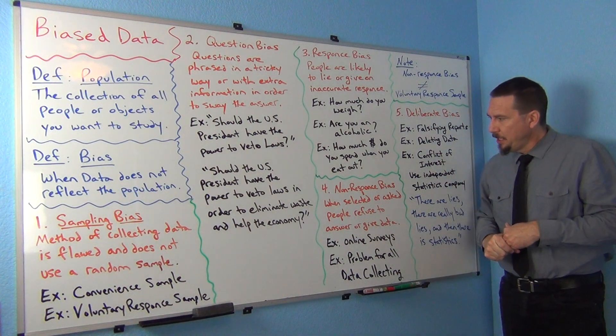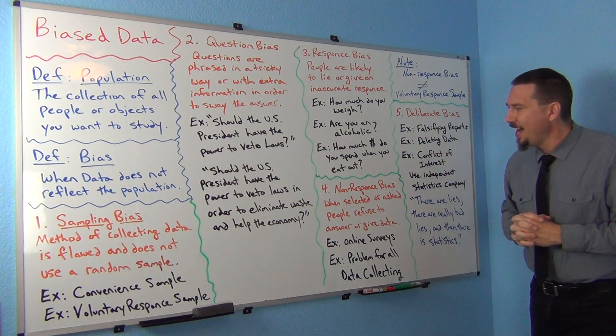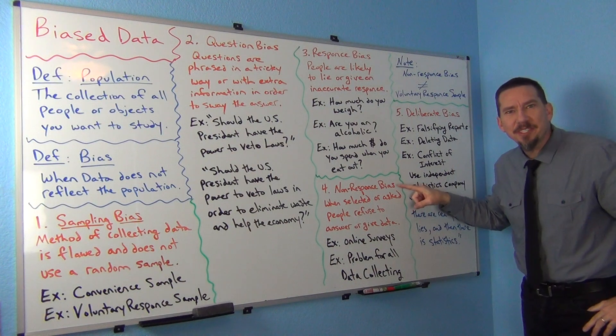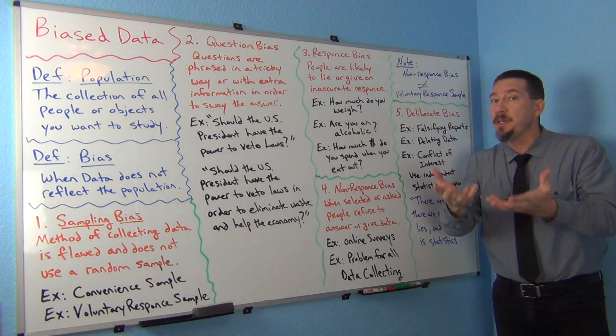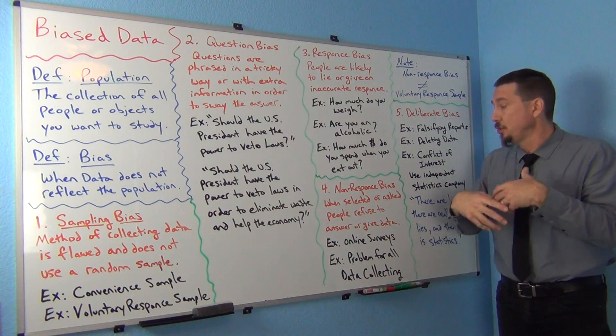Let's look at another one. Non-response bias. So this is when you select people to ask them questions or they're selected.